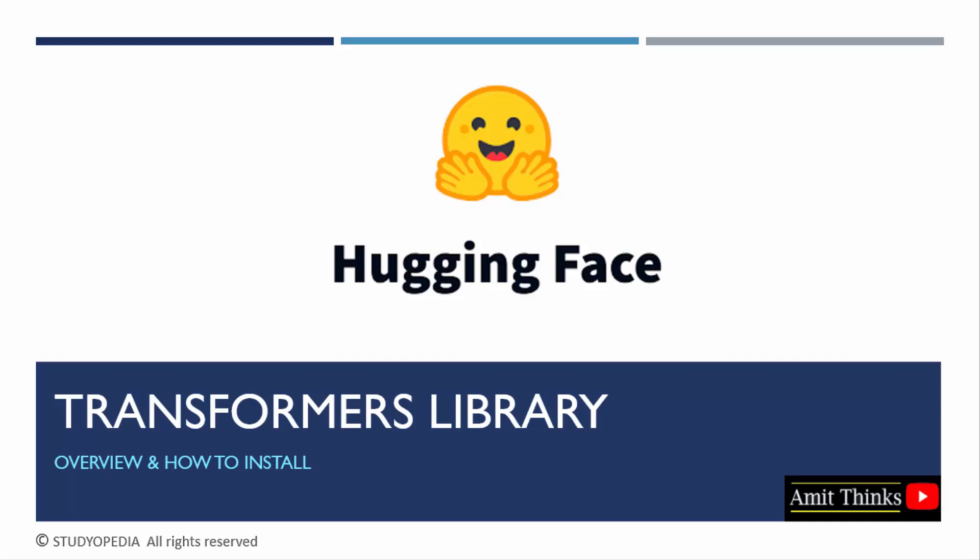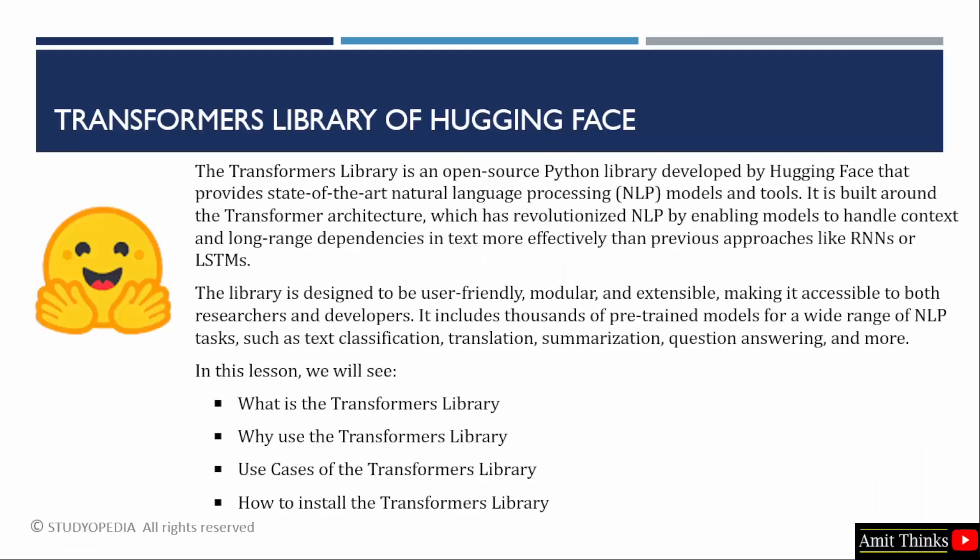We will understand the transformers library of HuggingFace. We will also learn how to install it. The transformers library is the core library for pre-trained models and pipelines. It is an open source Python library. HuggingFace developed the transformers library, and it is modular and extensible. It includes thousands of pre-trained models for a wide range of NLP tasks such as translation, text summarization, text classification, and others.